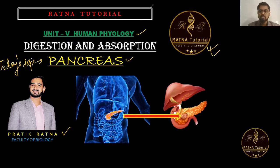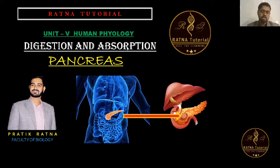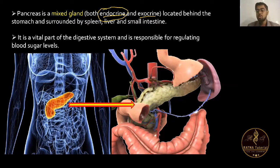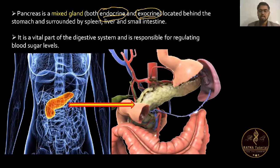Today's topic: pancreas is a mixed gland. Mixed gland means it is both an endocrine and exocrine gland. Endocrine means it is a gland which secretes hormones. The endocrine portion secretes directly into the bloodstream.